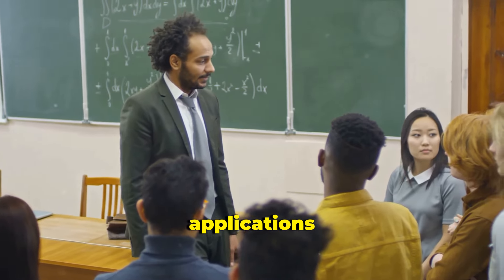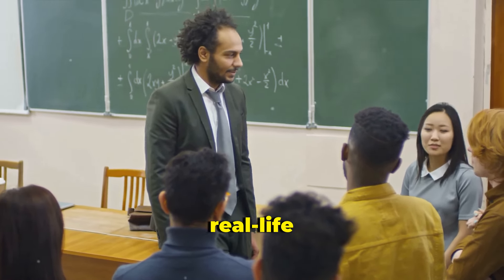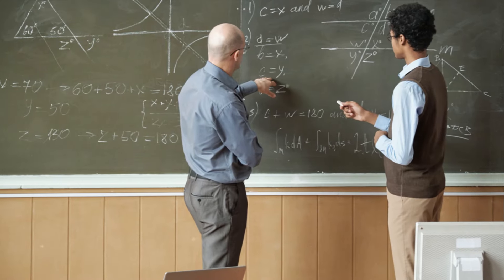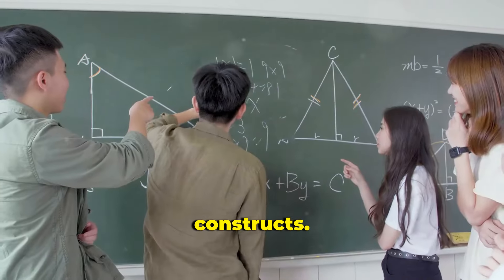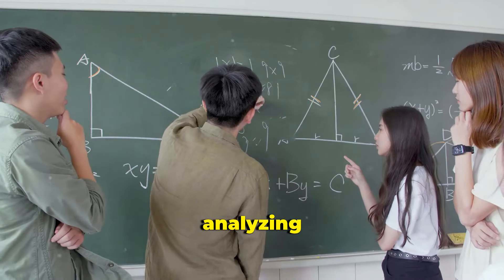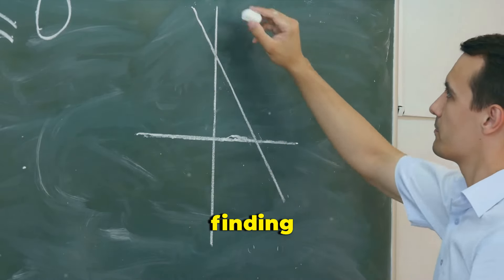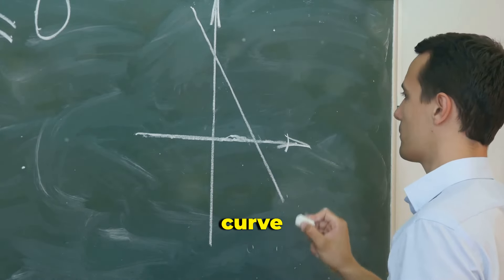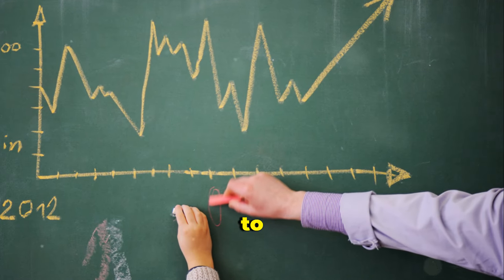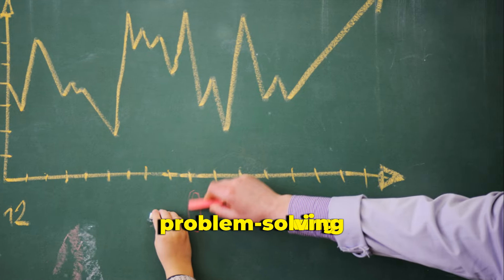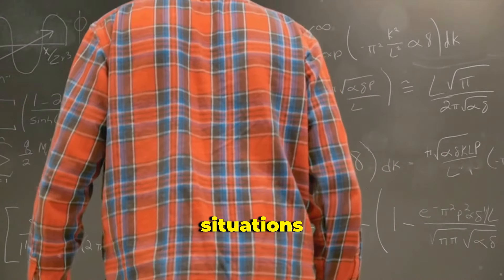Differential Calculus. Differential calculus deals with change and rates of change. The derivative, which is a principal concept here, represents the rate at which one quantity changes with respect to another. For example, it can tell you the rate at which the distance of a car changes with time. In practical terms, if you understand derivatives, you can determine not just how fast something is moving, but how its speed is changing at any moment — akin to knowing both the speed and the acceleration of a car at any point in time — crucial for making predictions based on rates of change.